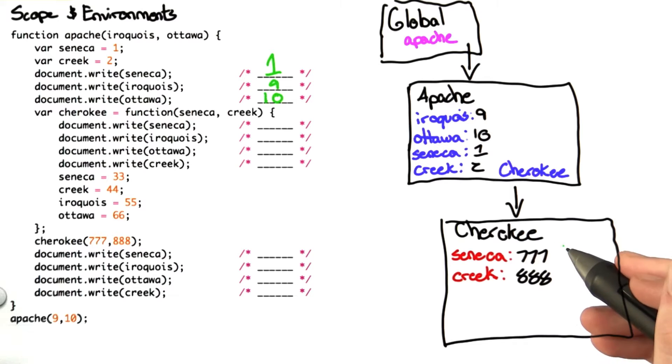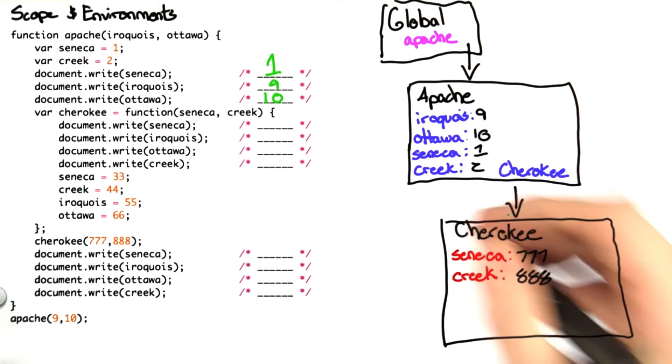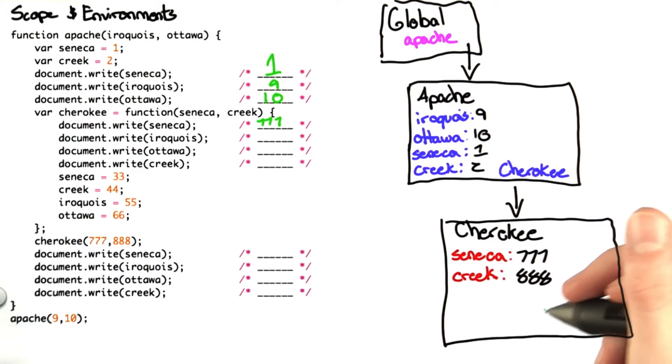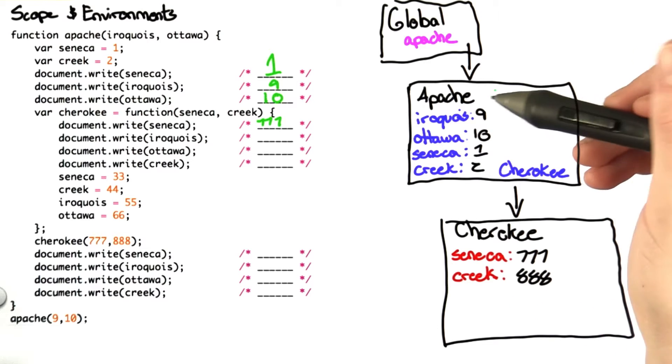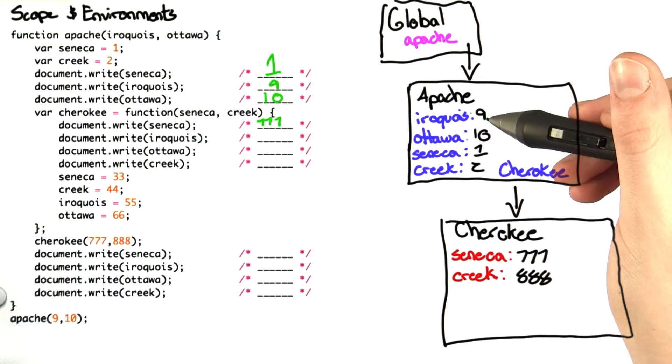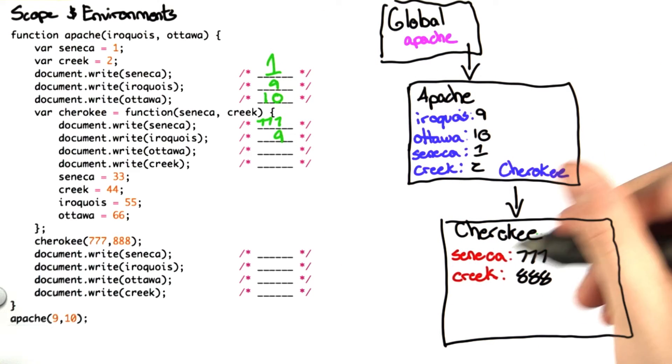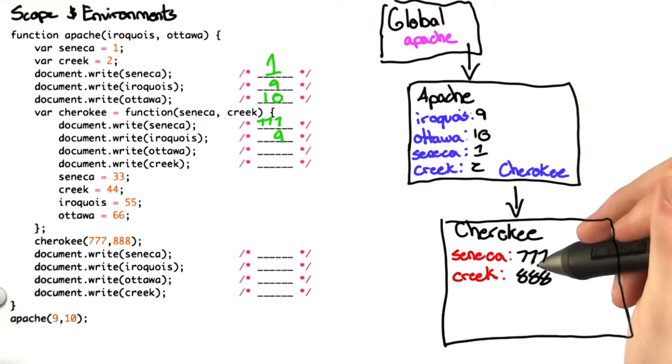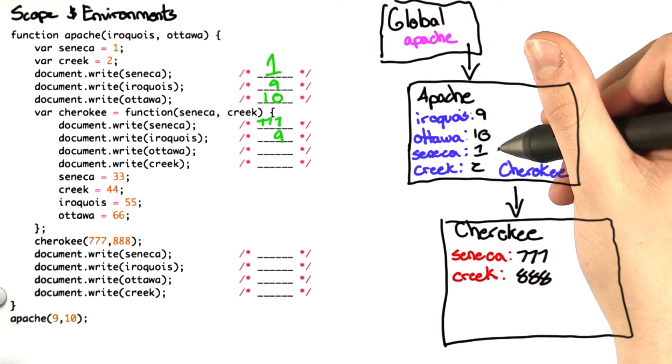We print out Seneca, which at the closest scope is 777. We then print out Iroquois. It's not in the scope of Cherokee, so we go up to Apache, and Iroquois is defined as 9. We now print out Ottawa. Ottawa is not defined here in Cherokee, but is defined in Apache as 10.